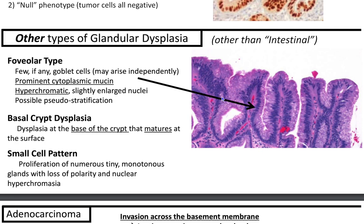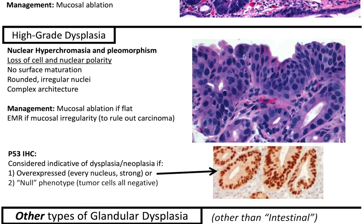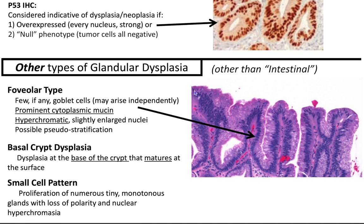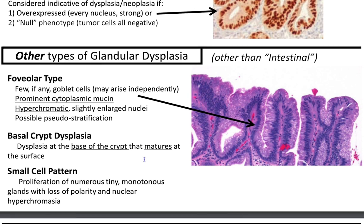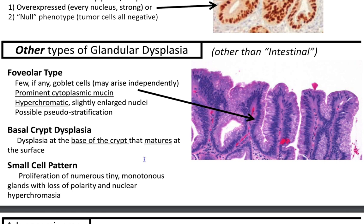Other types of glandular dysplasia beyond intestinal type include foveolar type, where you'll have few if any goblet cells, prominent cytoplasmic mucin, hyperchromatic slightly enlarged nuclei, and possible pseudostratification. There is also basal crypt dysplasia, where you have dysplasia at the base of the crypt that matures at the surface — which is extremely hard to identify. And small cell pattern, where there is proliferation of numerous tiny monotonous glands with loss of polarity and nuclear hypochromasia.